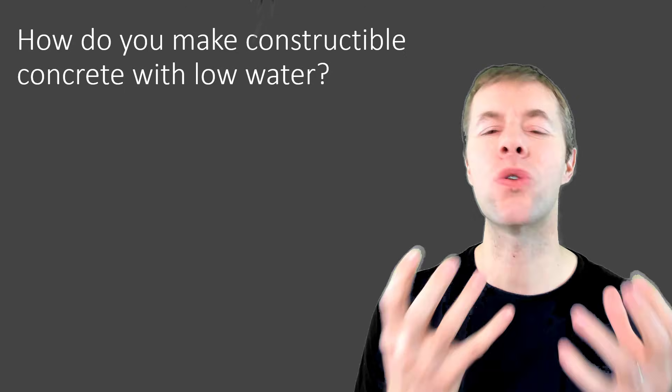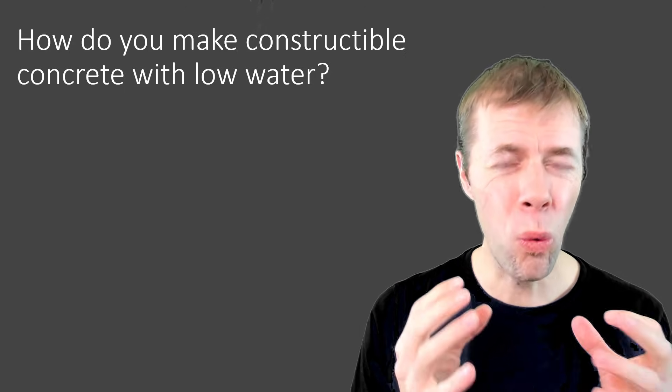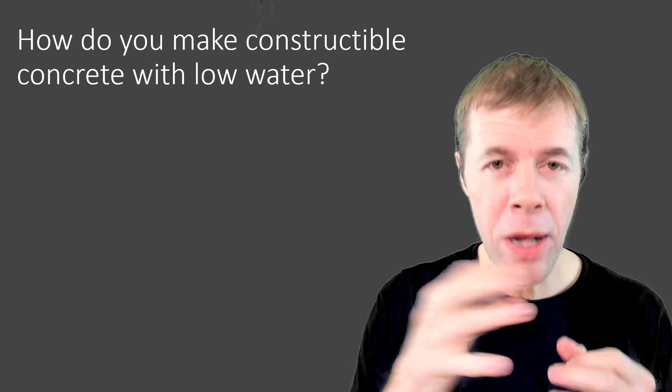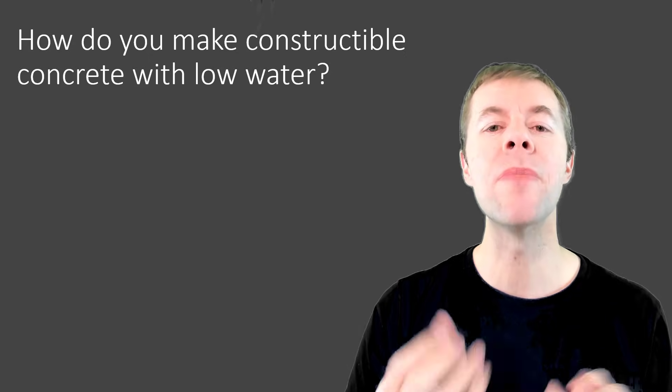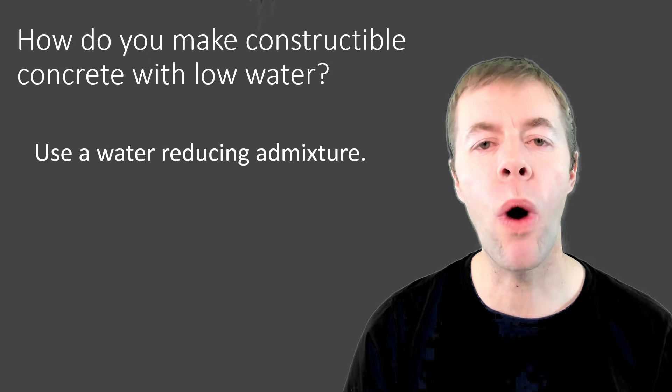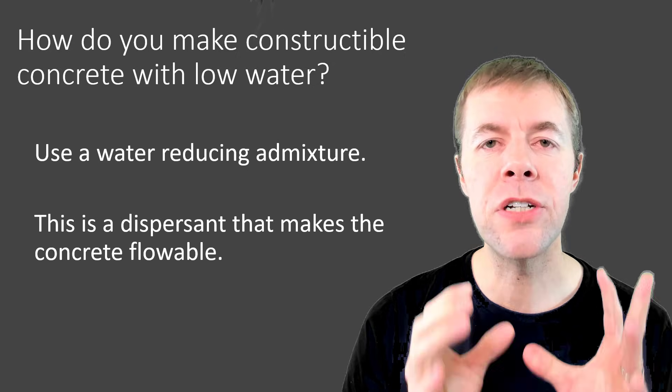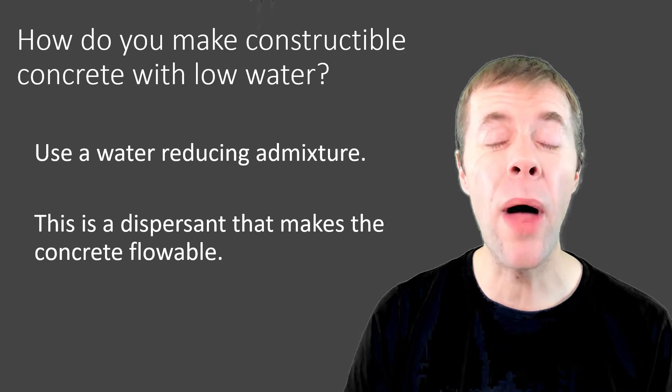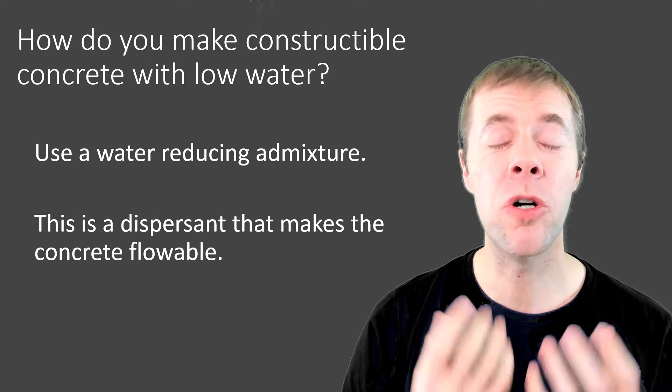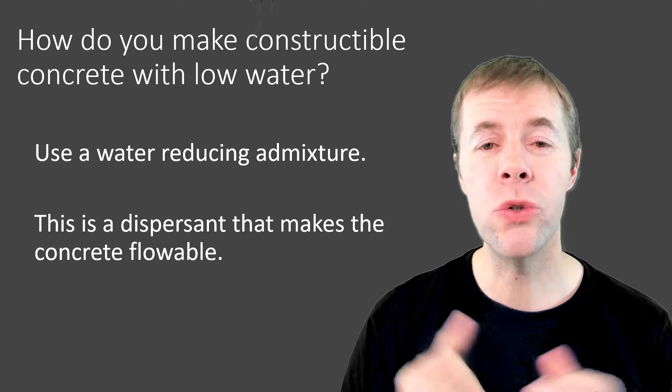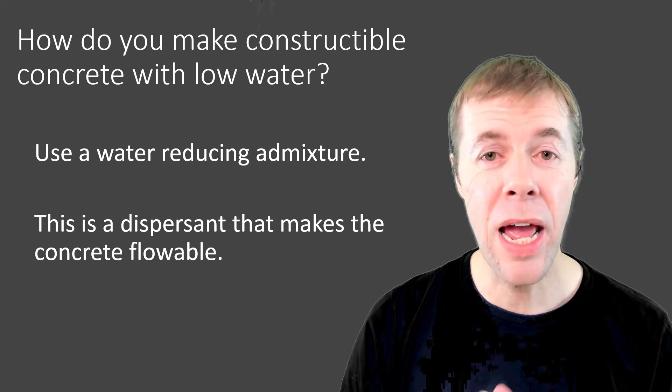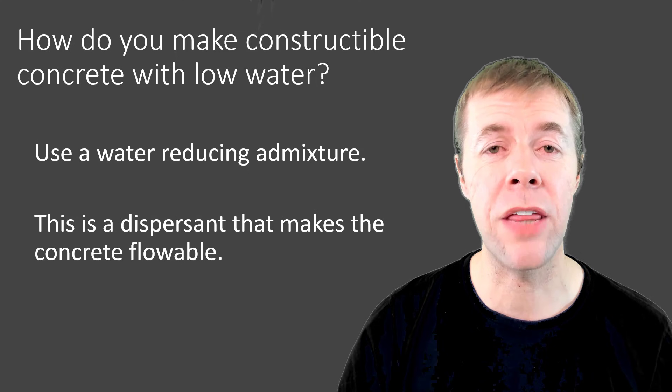So how do you make constructible concrete with low water content? I mean, if you have low amounts of water, it's not as flowable, right? Well, you need to use a water reducing admixture. This is a dispersant that makes the concrete flowable. And I'm going to link to some commercially available water reducers in the notes today, so please make sure you check them out.